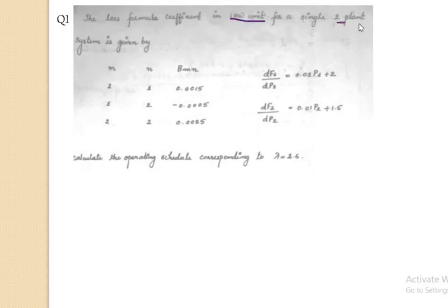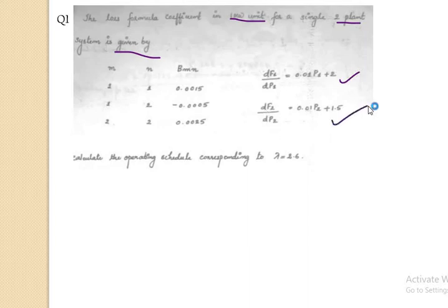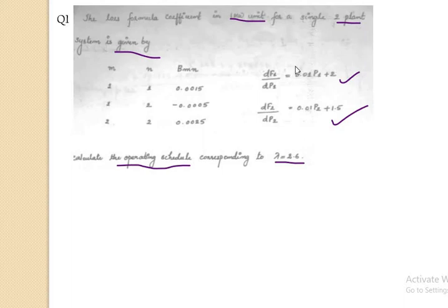Here is one question. The loss formula coefficients in 1 per megawatt units for a single two-plant system are given — M and N values, B_MN values are given. Then dF1/dP1, the incremental cost of the first unit, and dF2/dP2, the incremental cost of the second unit, are given. Calculate the operating schedule, meaning P1 and P2, corresponding to λ = 2.5. When B_MN coefficients are given, it is clear that transmission loss should be considered.